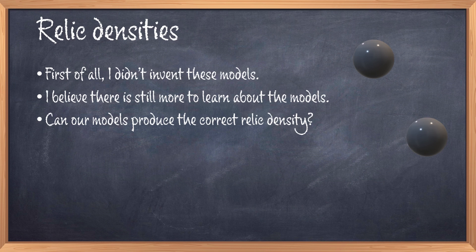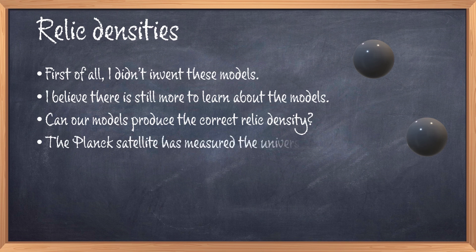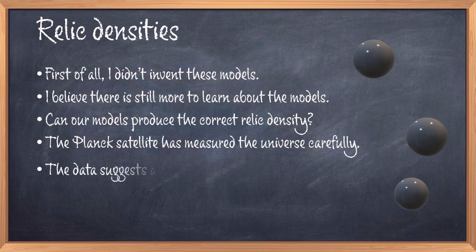Relic density refers to the fact that it was produced a long time ago. In the past decade, the Planck satellite has managed to do some quite precise measurements of our universe. From its measurement, we have determined that the dark matter relic density is around 0.12.